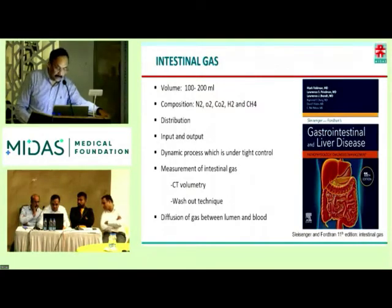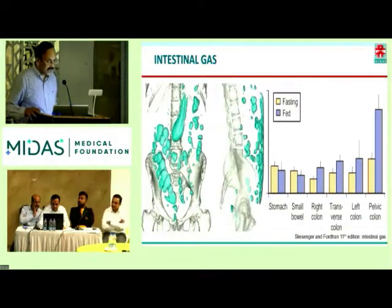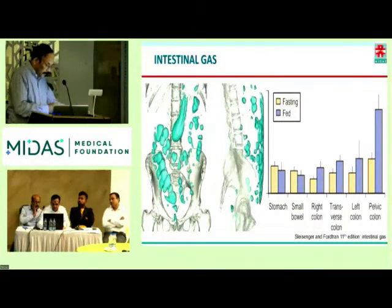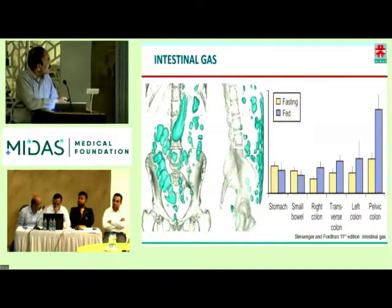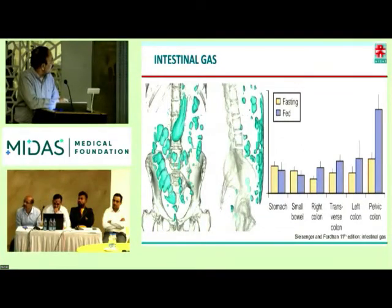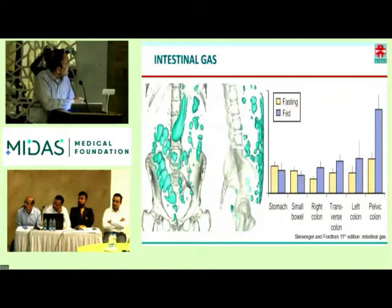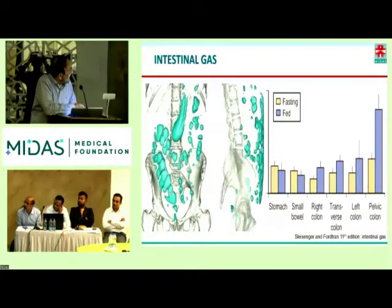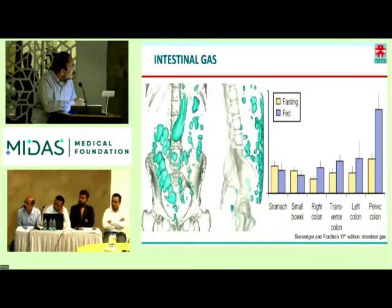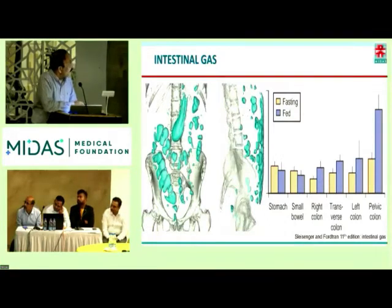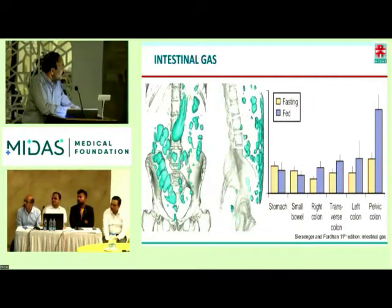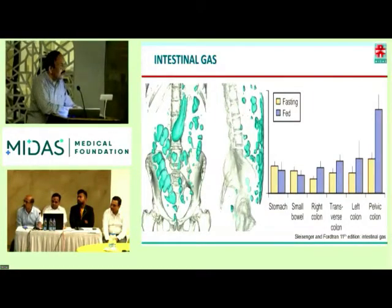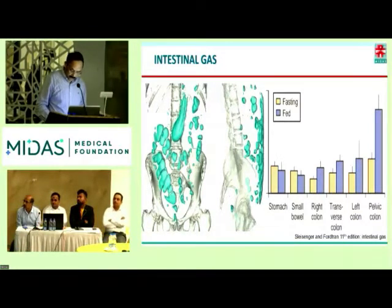There occurs a diffusion of gas between the lumen and the blood. As you can see, this is the stomach and the predominant gas is present in the large intestine. In the supine position, the gas is above because it is lighter — so you see the gas above. In the fasting versus post-meal state, post-meal the gas increases, but if you see stomach, small intestine, and colon, the gas in the colon increases, but not so much in the stomach and small intestine.